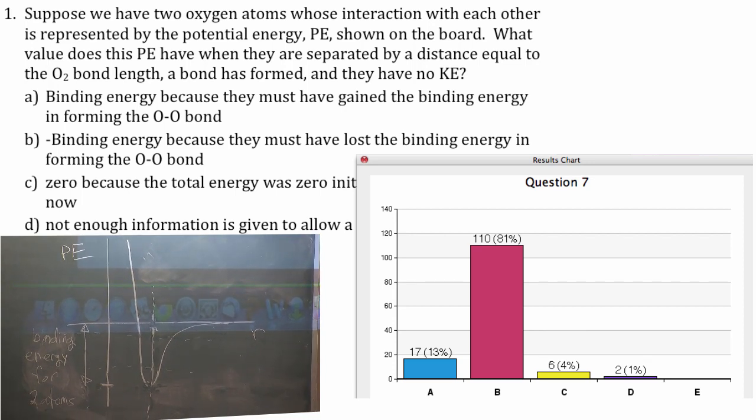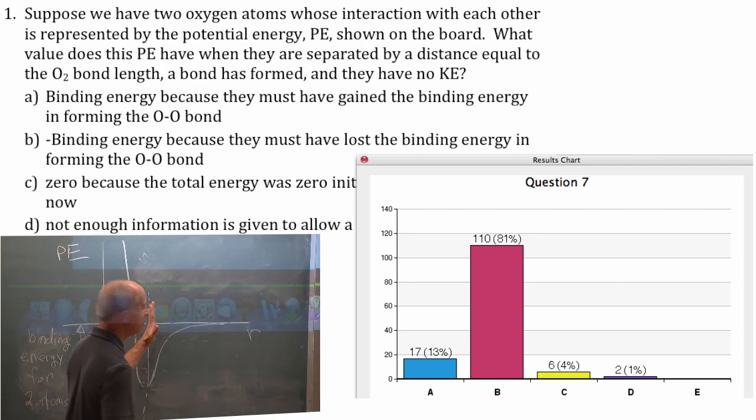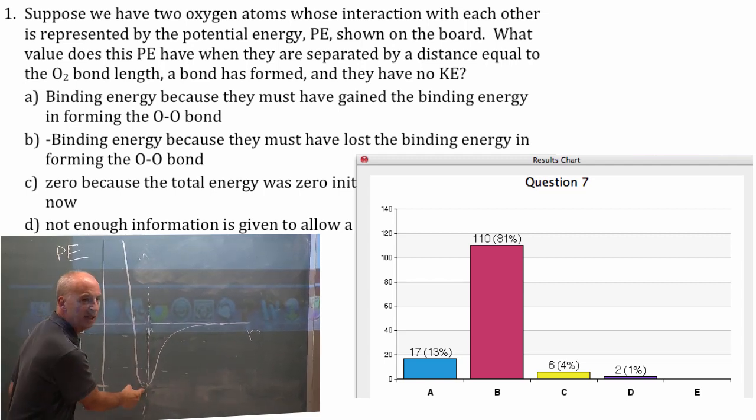If there's no kinetic energy then E total is given by the potential energy when the kinetic energy is zero, and if I'm telling you that it's at the equilibrium bond length then I'm kind of telling you that the potential energy is a minimum. Not kind of, I'm exactly telling you that.